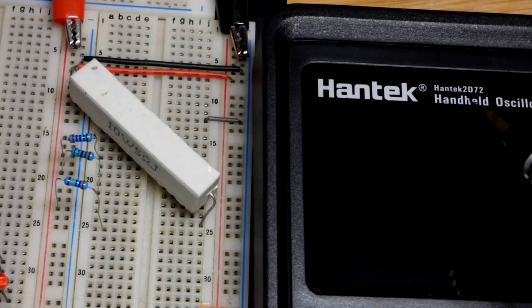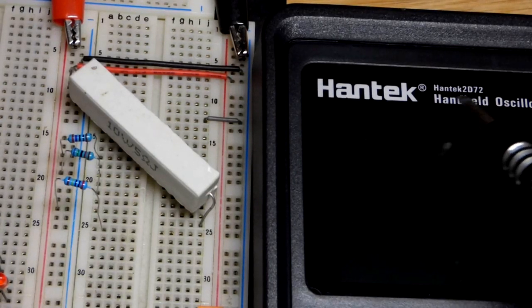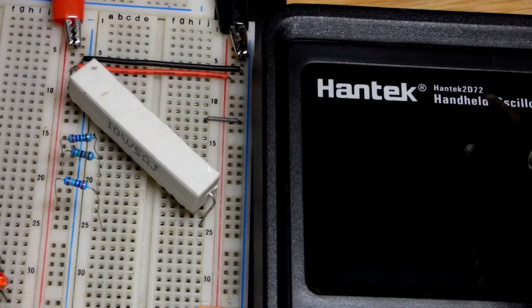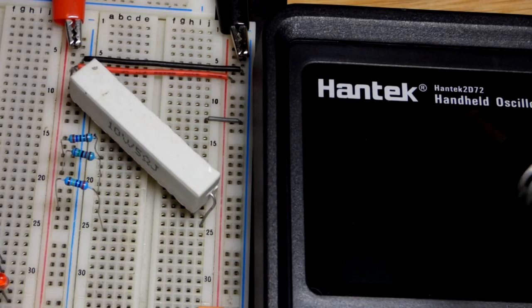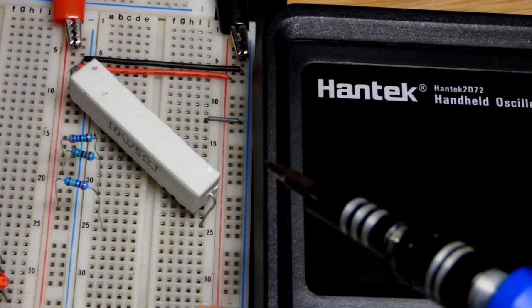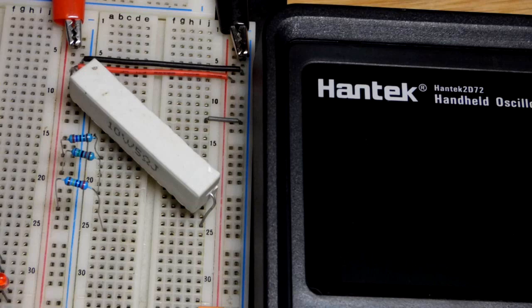So now in this video, we're just going to look at measuring current with the Hantech 2D72. It is, there's a multimeter in there, but it's primarily an oscilloscope and also a waveform generator. So we're going to look at measuring current in this video.